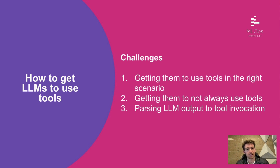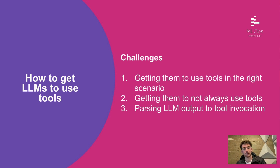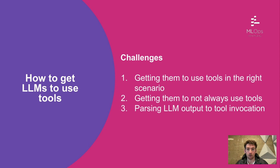There are a lot of challenges with this. The most common ones we see people running into in LangChain are: how to get language models to use tools in the right scenario, how to get them not to always use tools — sometimes you have a conversational bot and it's totally fine if it just wants to converse with you, so striking that balance is really tricky — and then the third one is basically parsing the LLM output to be a specific tool invocation. I'm going to deep dive on these for the majority of this presentation.